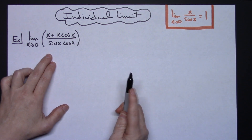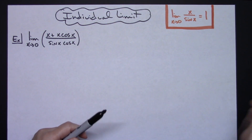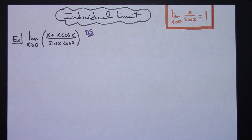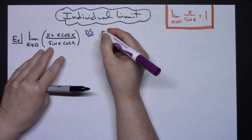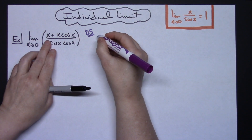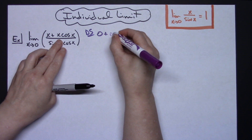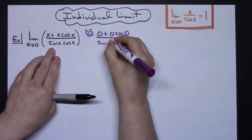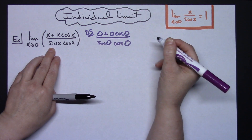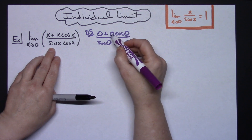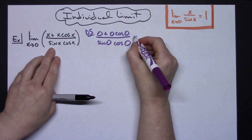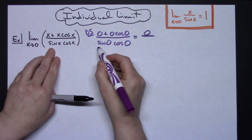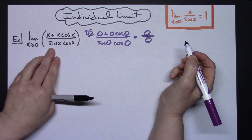The first thing we're going to do is check for direct substitution, because you should always check that first to see if you really do have to do any algebra manipulation. If I directly plug in 0, I'll have 0 plus 0 times cosine 0, all over sine of 0 cosine 0. Cosine of 0 is 1, so 1 times 0 is 0, plus another 0 gives me 0 on top. Cosine of 0 is 1, sine of 0 is 0, so 0 times 1 gives me 0 on the bottom.